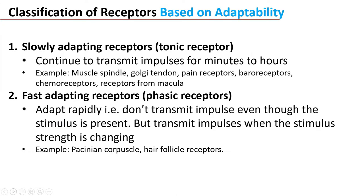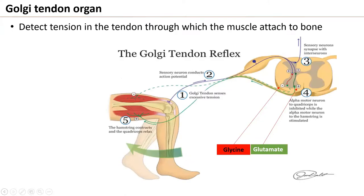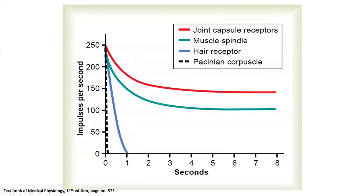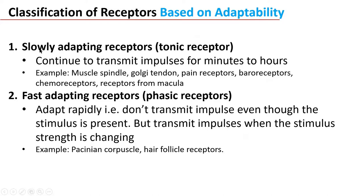Now the classification of receptors based on adaptability. There are two types: slowly adapting receptors, also called tonic receptors, which continue to transmit impulses from minutes to hours. Examples include muscle spindle, Golgi tendon organ, pain receptors, baroreceptors, chemoreceptors, and receptors from the macula. Muscle spindles continuously send firing to the CNS so that the CNS updates the position, contraction force, tension, and velocity of the muscle.